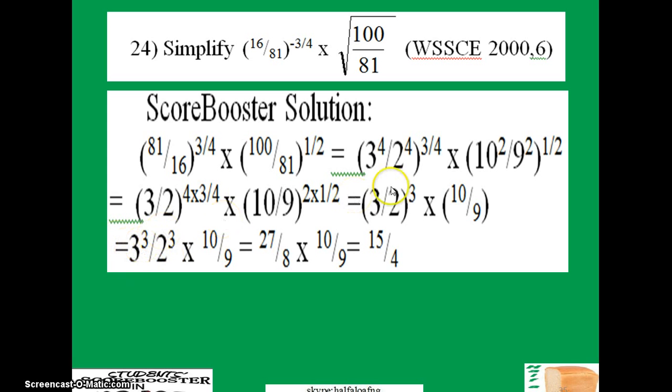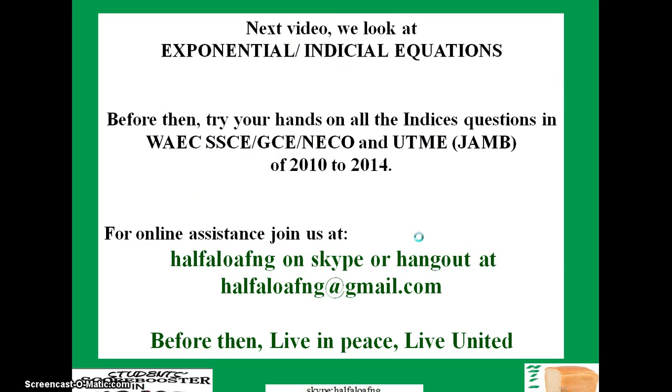And 3 raised to power 3 is 27, 2 raised to power 3 is 8, and you have 10 over 9. The simplification will give you 15 over 4. So this is just a bit on indices involving decimal numbers.